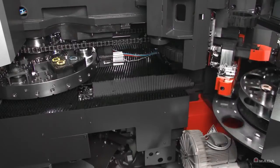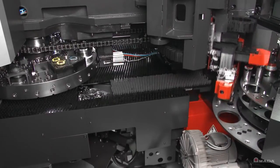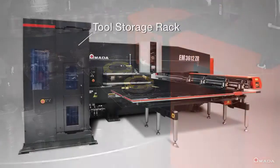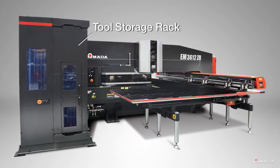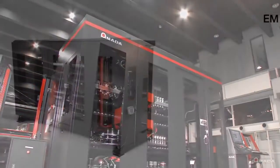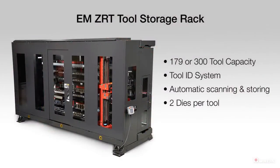The machine can detect if any taps break during operation. If a tap does break, there are seven additional tapping tools on standby for automatic replacement. The tool storage rack handles the automatic replacement of tooling, and it is available in 179 or 300 tool configurations.